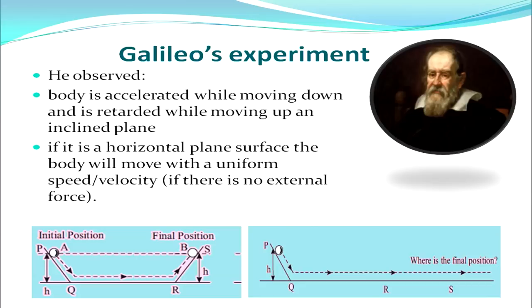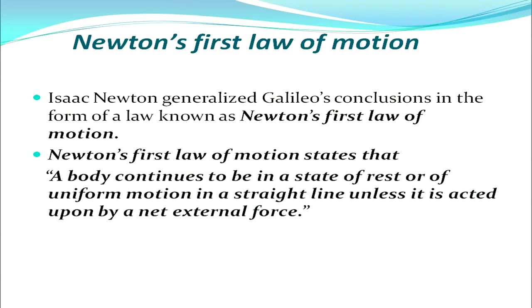Galileo observed that a body is accelerated while moving down and retarded while moving up an inclined plane, as shown in the first figure. If it is a horizontal plane surface, the body will move with uniform velocity if there is no external force, as shown in the second figure. From these observations, Isaac Newton generalized Galileo's conclusion as Newton's first law of motion: a body continues to be in a state of rest or of uniform motion in a straight line unless acted upon by a net external force.